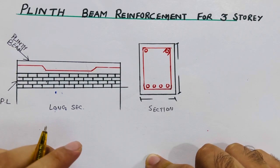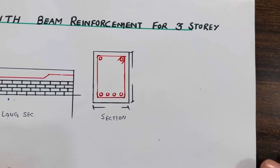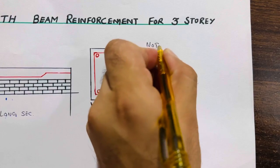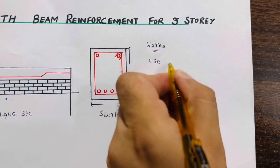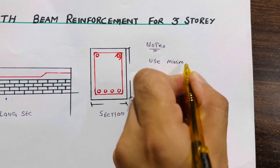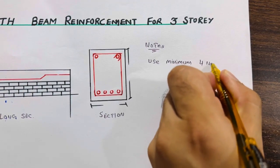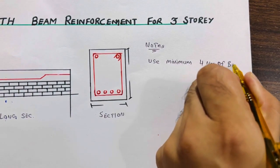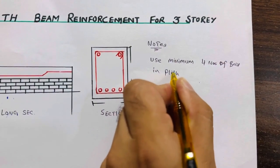For plinth beam, first of all I will guide you for some important notes. Remember: use a minimum of four numbers of bars in a plinth beam.